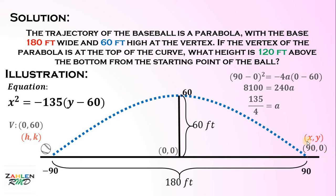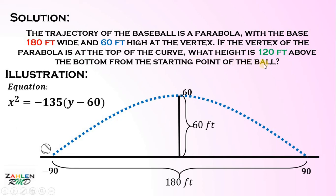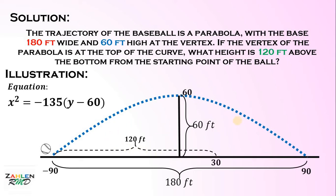Now we can answer the question: what height is 120 feet above the bottom from the starting point of the ball? From the starting point to the origin we have 90, so we need to add 30 more to cover 120 feet. Our goal is to determine the height of the ball at this position. Let's call the height n, so the coordinates of this ball are 30, n. Our goal is to solve for n, the height 120 feet above the bottom from the starting point.